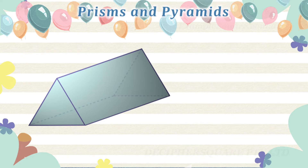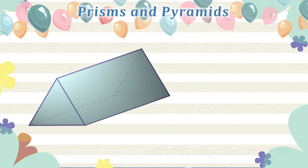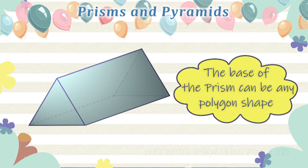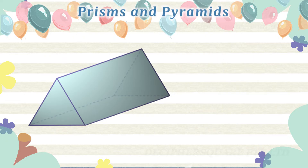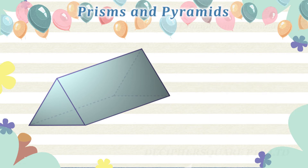The two identical ends of the prism are parallel to each other and are the two bases of the prism. The base of the prism can be any polygon shape. All other faces of a prism are parallelograms or rectangles. All the faces of the prism are flat faces.